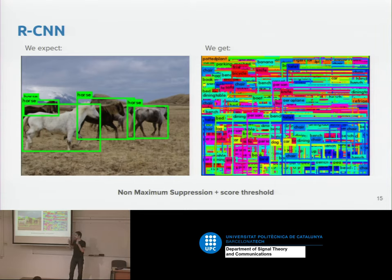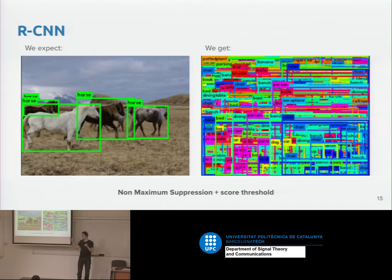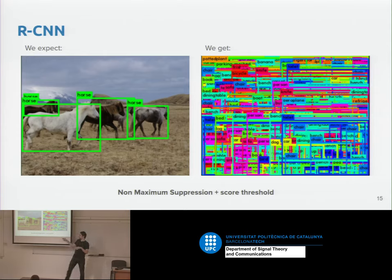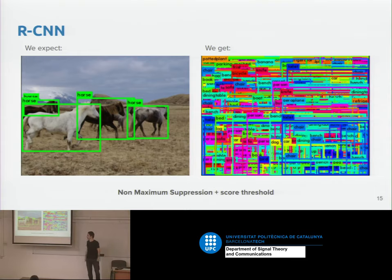To get a clean output you do score thresholding — for instance, something that's not a TV gets a low probability like 0.03, so you discard it. You also do non-maximum suppression: if you have several detections for horse from multiple proposals, you take the one with the highest score and erase the others based on intersection over union.